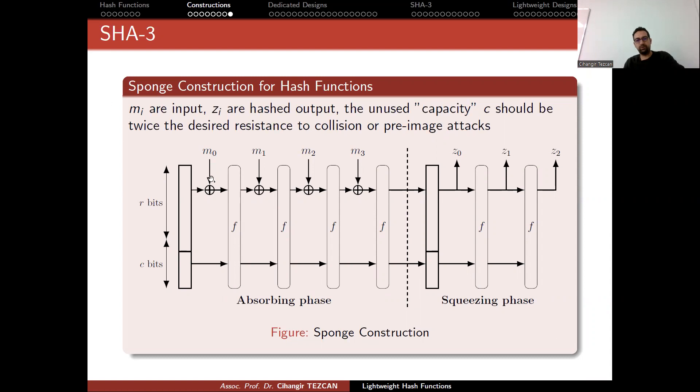So this is how it works. You have a very huge internal state. It is filled with r bits and c bits. So the whole internal state is r plus c bits. So initially you fill it with some data, maybe with IV.